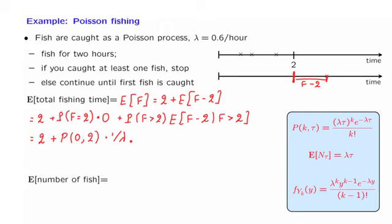Our last question is: what is the expected number of fish you are going to catch? We break this into two pieces: the number of fish caught during the first two hours, and the number caught during the remaining hours. During the first two hours, the expected number is lambda times tau — with lambda equal to 0.6 and tau equal to 2 — plus the expected number of fish caught afterwards.